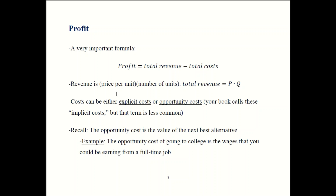Why does that formula work? Price is the amount of money you get per unit — you then multiply it by the number of units to figure out how much money you've gotten in total. So if you sell five widgets for $10 each, how much money have you made? Five times ten — that's $50.